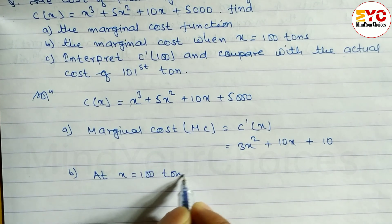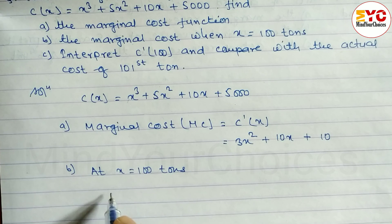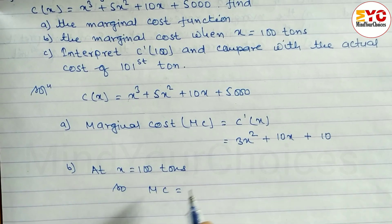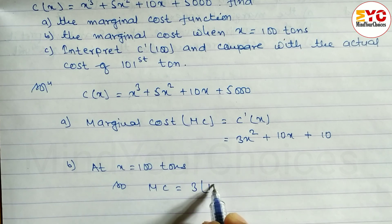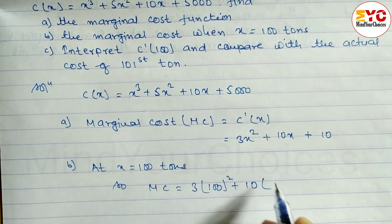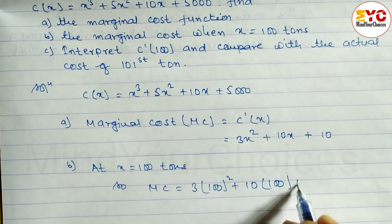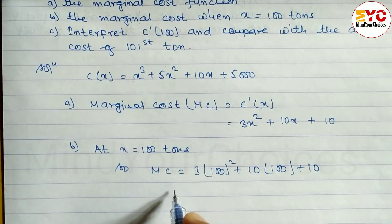At x is equal to 100 tons, the x value is 100. MC is equal to: in place of x we put 100. So 3 times 100² plus 10 times 100 plus 10. Now just calculate this.